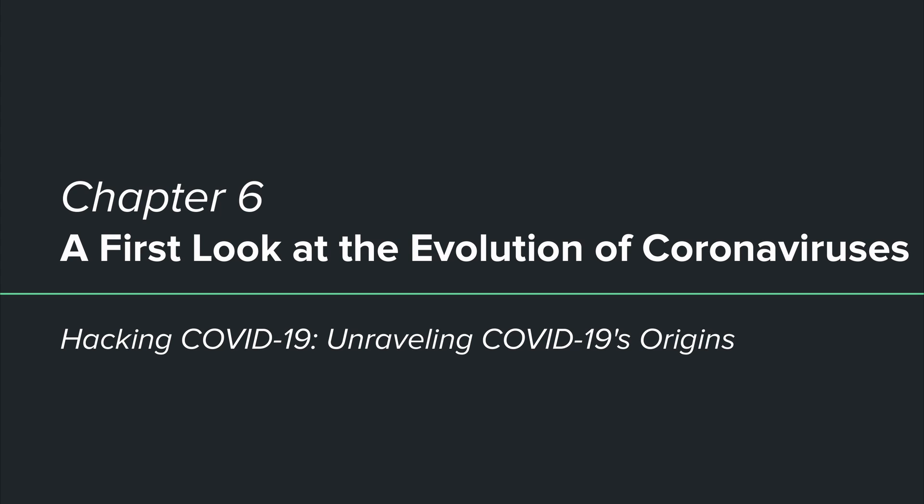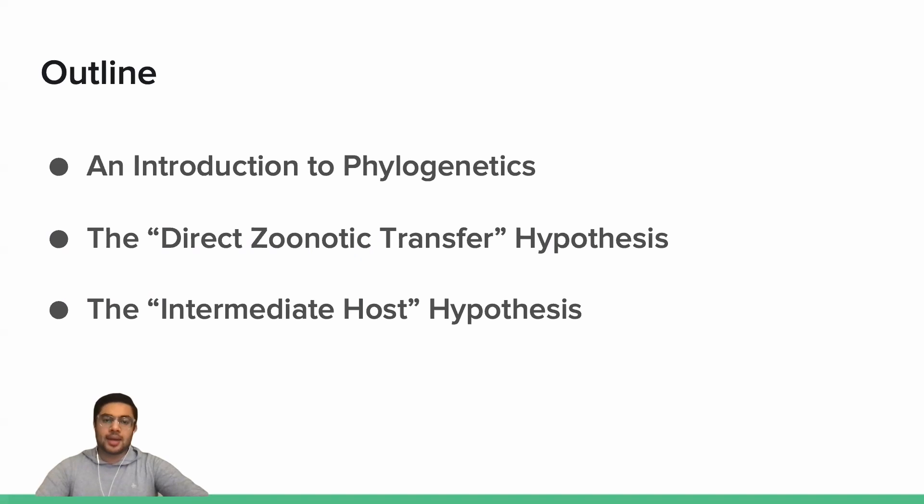Welcome to Chapter 6, a first look at the evolution of coronaviruses. In this chapter, we will try to unravel the origin of SARS-CoV-2. In the previous chapter, we explored the artificial origin hypothesis. Now, you might naturally ask the following: what exactly is the origin of SARS-CoV-2?